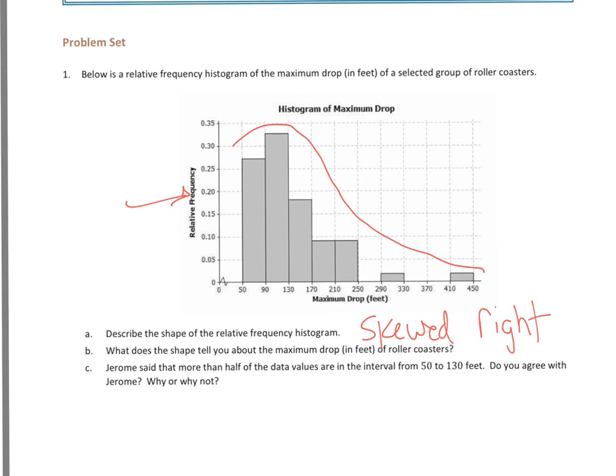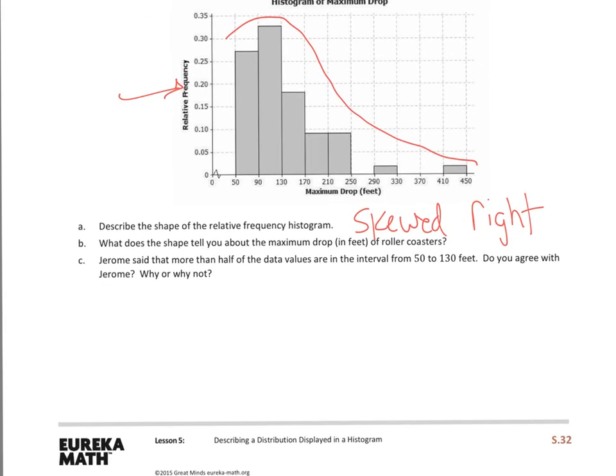What does the shape tell you about the maximum drop in feet of roller coasters? And I'm going to bring B down here because it's easier for me to write. What it tells me is that the majority, or most of the roller coasters, have a max drop between 50 and 170. That's where the majority of the data is. So there's my description right there.